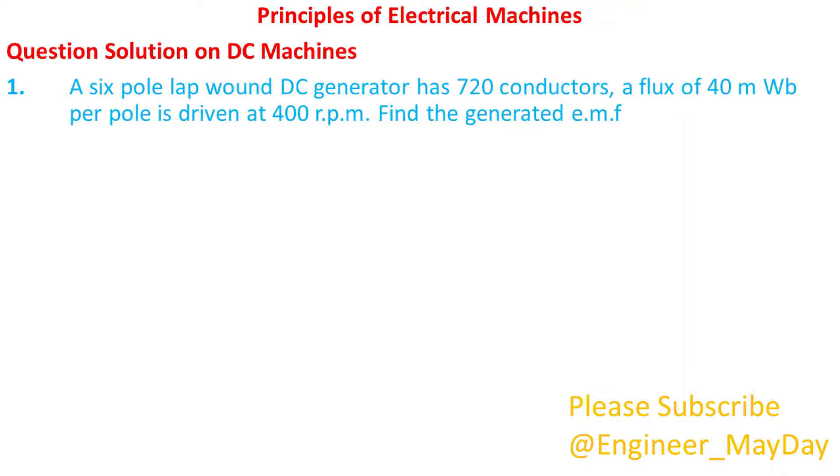Let's begin with this question. A 6-pole lap wound DC generator has 720 conductors, a flux of 40 milliweber per pole is driven at 400 RPM. Find the generated EMF.